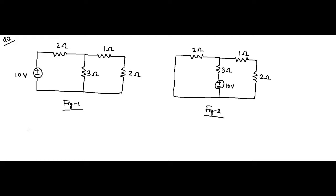Here we are again with another question. Again a single source network we have considered and we have to prove the validity of reciprocity theorem here. We have this circuit — the first figure where the single source voltage source is 10 volt, with other resistor branches connected. In the second figure, the difference is that the 10 volt voltage source is being shifted to the middle branch, the second branch.